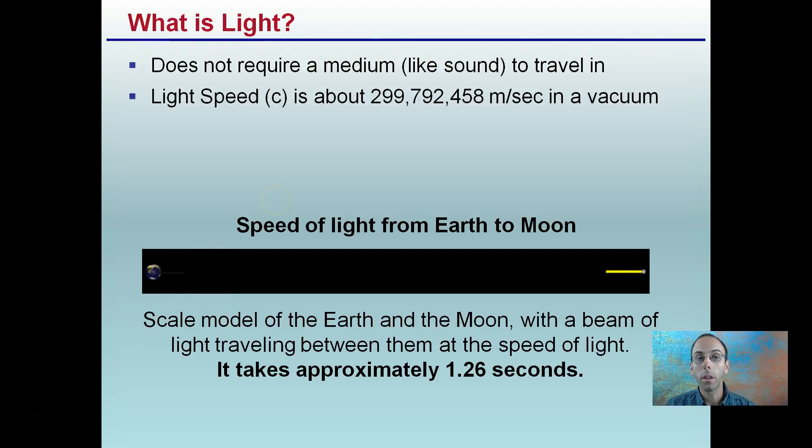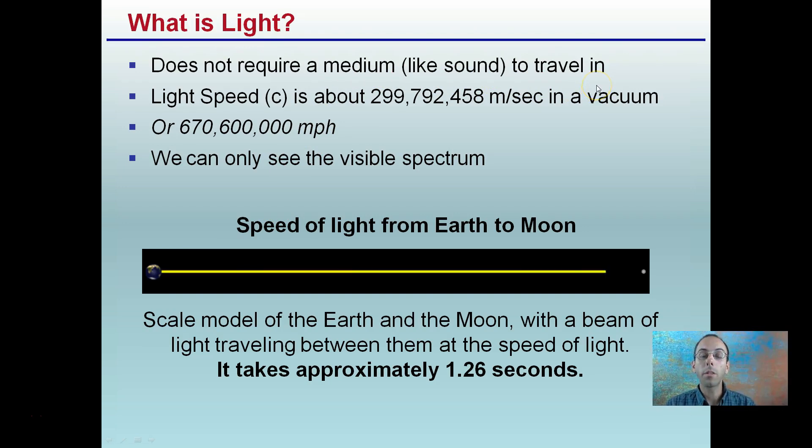So starting first with just what is light? Light does not require a medium like sound to travel in. Sound requires air to be able to travel through, and the air pressure differences are perceived by your eardrum. The speed of light, represented by the letter C, famous in Einstein's E=MC² equation, is about roughly 300 million meters per second in a vacuum, or that's about 670.6 million miles per hour. And of light, we can only see what's called the visible spectrum.